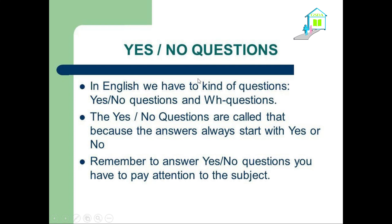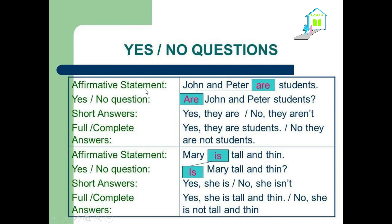Let's move on to yes or no questions — how we can answer with yes or no to some questions. Here are the examples. Affirmative statement: John and Peril are students. This sentence is affirmative. Yes or no question: Are John and Peril students? Yes, they are. Or no, they aren't. These are the short forms of the verb to be. We can also use the full forms.